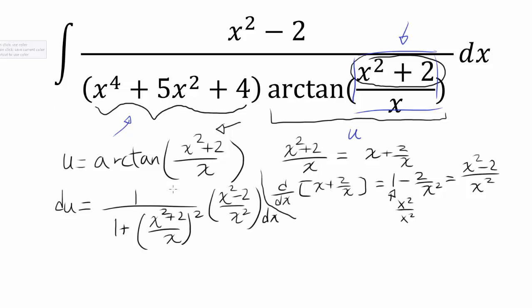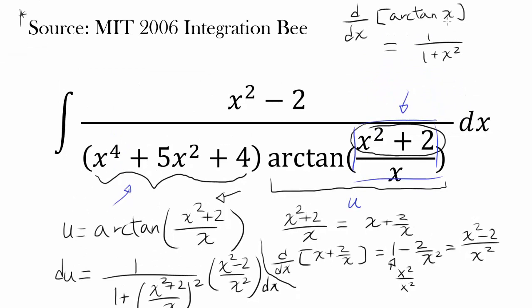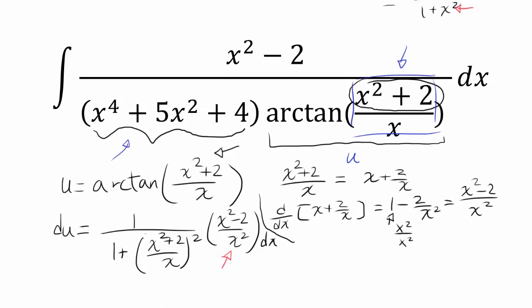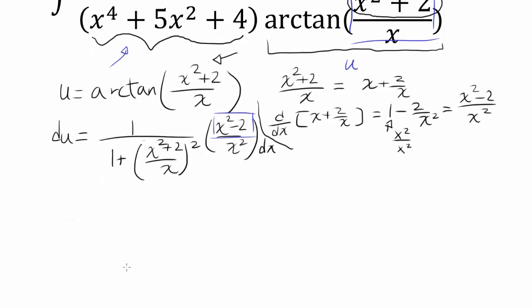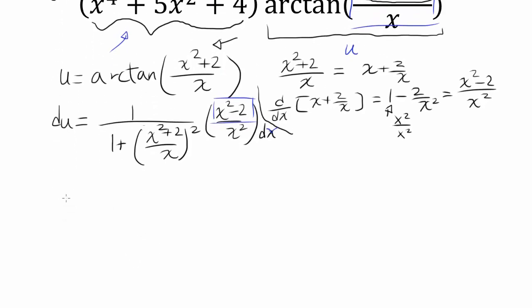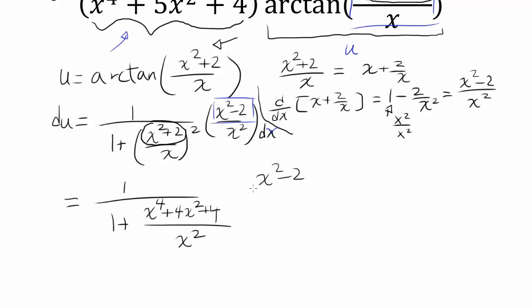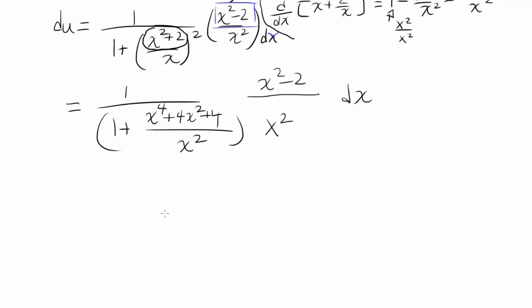So we have our du right here. I'm just applying the differentiation formula for arctangent: when you differentiate arctangent of u, you get 1 over 1 plus u squared, then multiply by the derivative of u because of the chain rule. We have something very promising because we wish to have x squared minus 2 up top, and we do have x squared minus 2 being generated. So continuing: 1 over 1 plus — squaring (x squared plus 2) gives x to the 4th plus 4x squared plus 4 over x squared — and you have (x squared minus 2) over x squared, then multiply by x squared and dx.